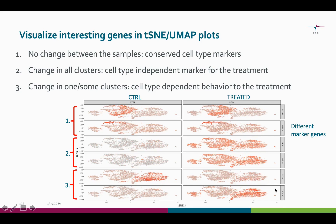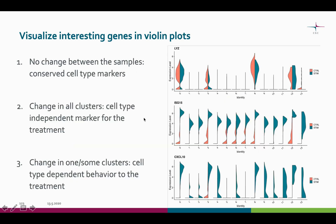And then vice versa with this gene. We can see the same three scenarios here in the violin plots. On the x-axis we see the different clusters, and for each of these three genes we see the expression level in control — red — and treated — green.